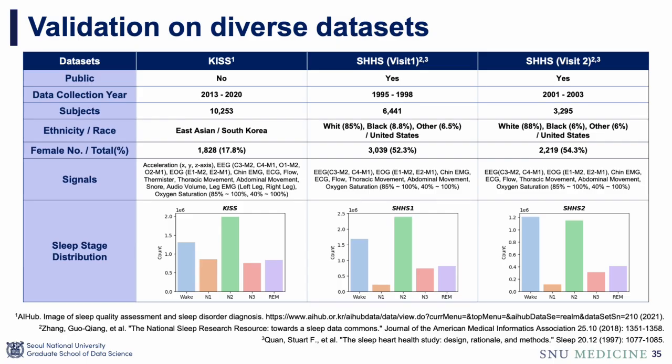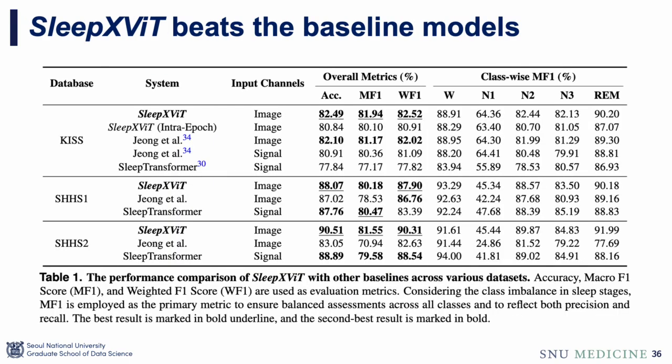In this study, we employed the KISS image dataset and converted the public SHHS signal dataset into an image format similar to KISS. Despite differences between these datasets, our model showed robust performance. SlipXVIT achieved state-of-the-art performance on all datasets, beating the baseline models.